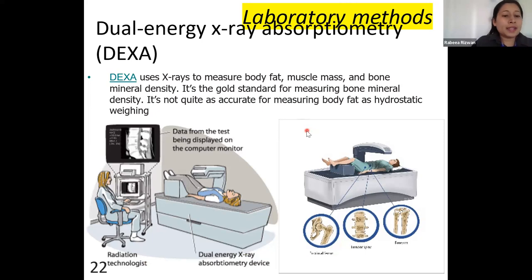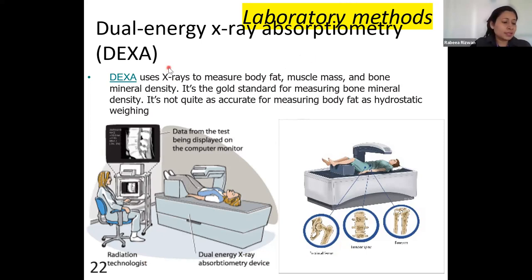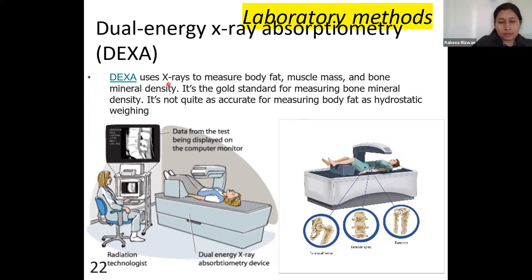Next is DEXA, which stands for Dual Energy X-ray Absorptiometry. DEXA uses two X-ray radiations directed at a part of the body, and by analyzing reflections and absorptions, it evaluates bone density — including osteoporosis — as well as body fat, muscle mass, and bone mineral density. It is also a gold standard for measuring bone mineral density.